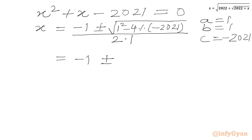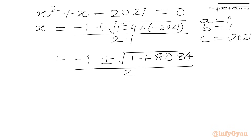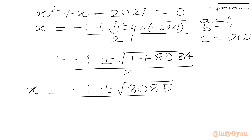Applying the quadratic formula gives X equals (minus 1 plus or minus the square root of 1 plus 8084) over 2, which equals (minus 1 plus or minus square root of 8085) over 2. So again we have two real values, x3 and x4.